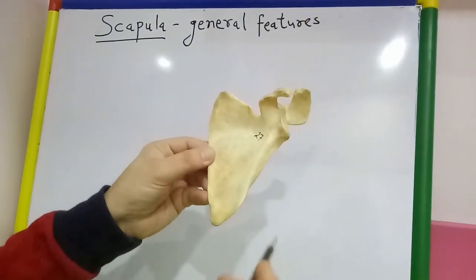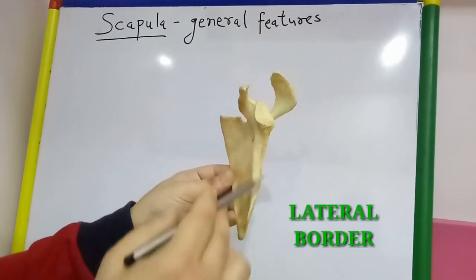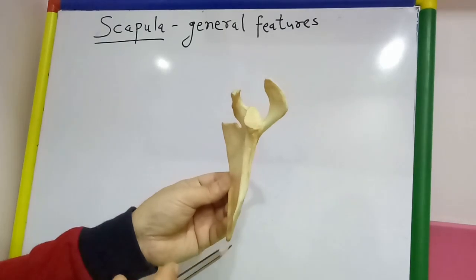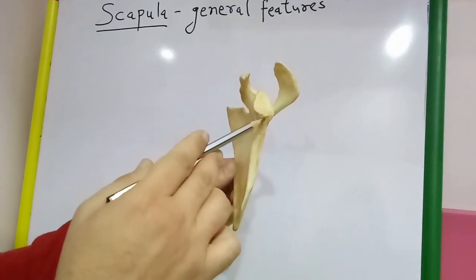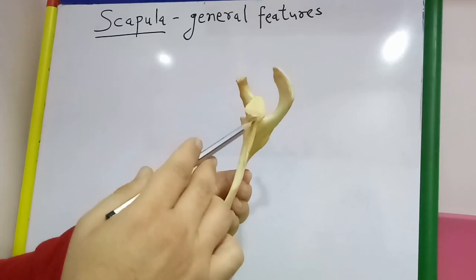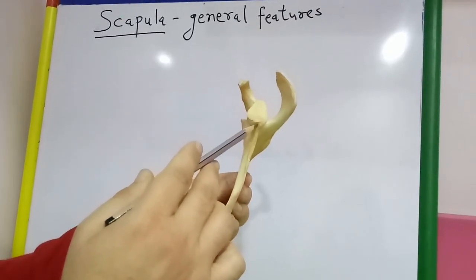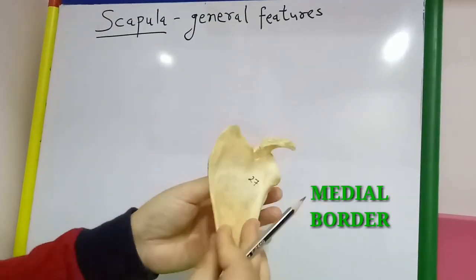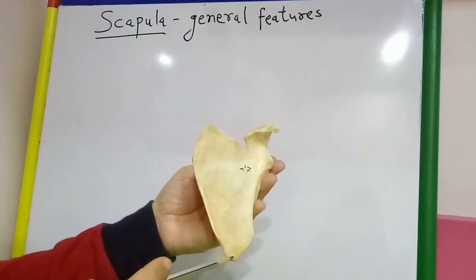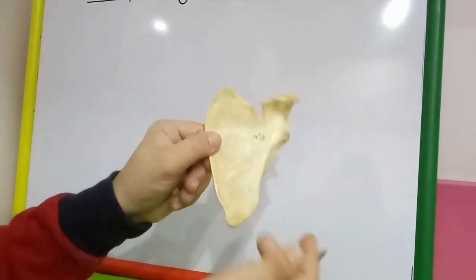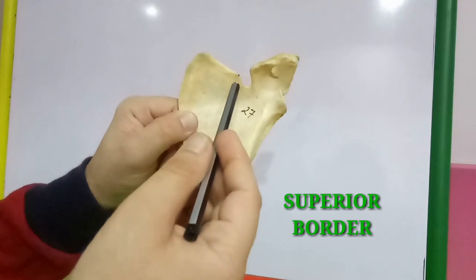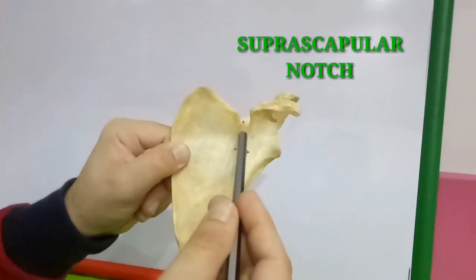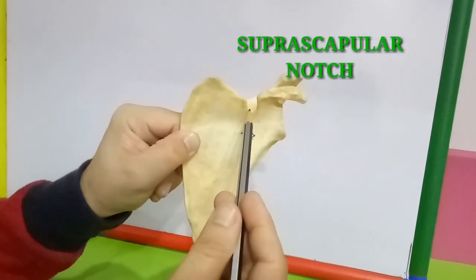Out of the three borders, the thickest border is the lateral border. The lateral border extends from the lateral angle to the inferior angle. In the upper part of the lateral border, we can see the infraglenoid tubercle. The medial border is thin compared to the lateral border and extends from the superior angle to the inferior angle. The superior border is also thin, and laterally there is a notch along it known as the suprascapular notch.